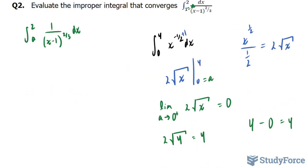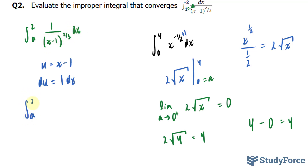Next we take the integral of this function using u-substitution. I'll set u equal to x minus one and take the derivative implicitly with respect to x, giving du equals one times dx. I'll replace x minus one with u and dx with du, giving me the integral between a and two of one over u to the power of two over three du.